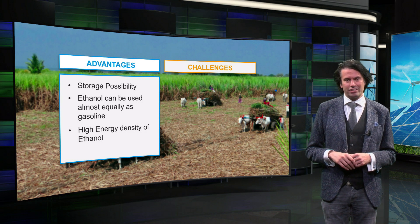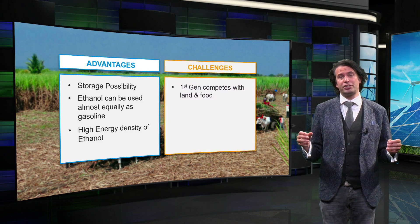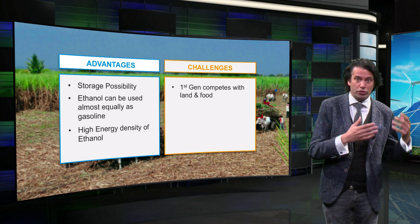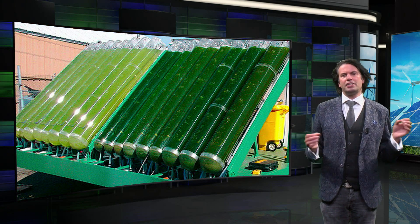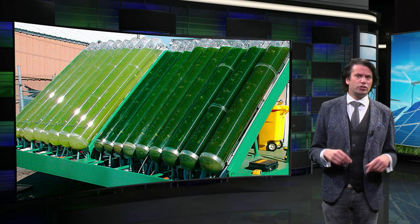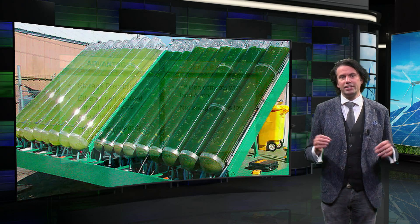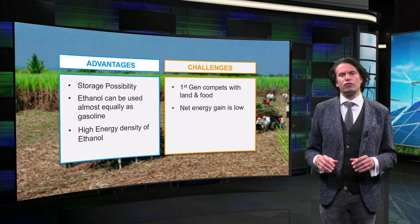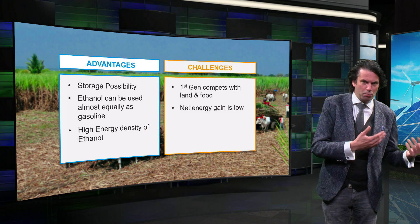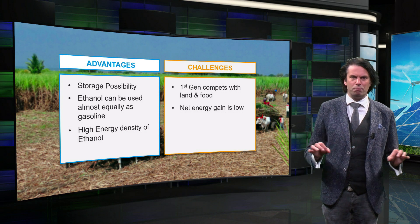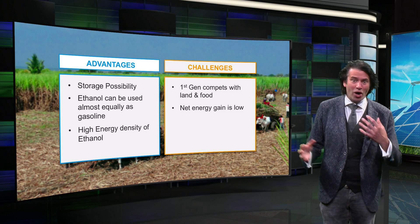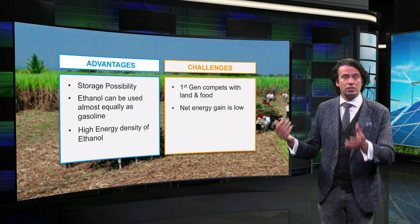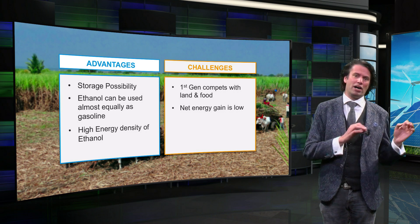Biomass also has some disadvantages. The first generation biomass, such as sugarcane, is in competition for land and water with crops cultivated for food. The latest generation, however, like algae, doesn't have this limitation. Secondly, the net energy gain of some biofuels can be very low. The energy balance of converting corn into liquids like palm oil and bioethanol can even become negative. This means that more energy is used in processing, transportation, land use, and fermentation than is finally stored in the biofuel.